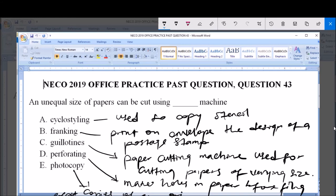But the question says an unequal size of paper can be cut using dash. The Gillotine machine, also known as the paper cutting machine, is used to cut papers into varying size. So the answer to this question is option C, the Gillotine machine.